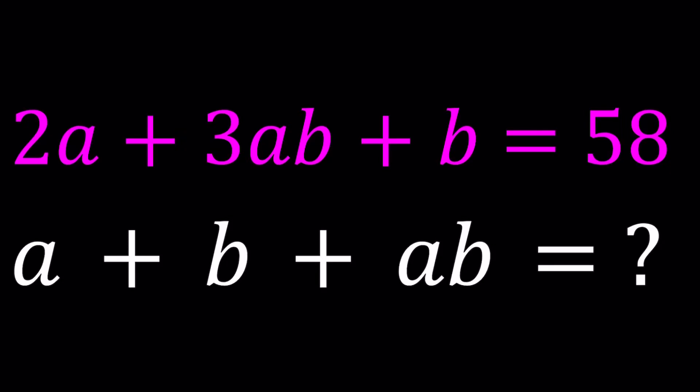Hello everyone. In this video, we're going to be solving a Diophantine equation. We have 2a plus 3ab plus b equals 58, where a and b are integers. And we're going to evaluate a plus b plus ab.